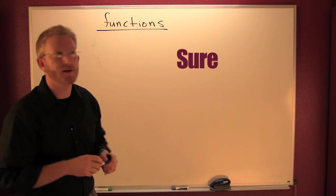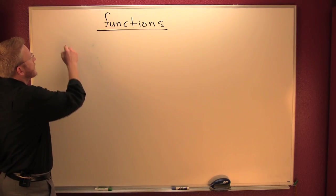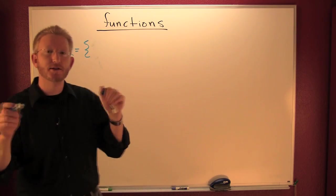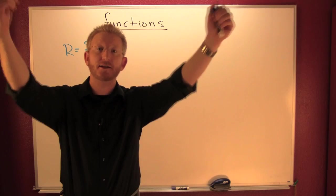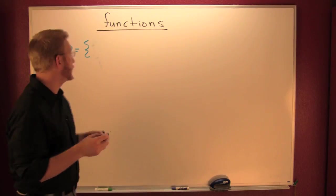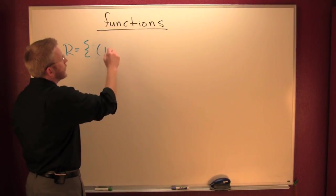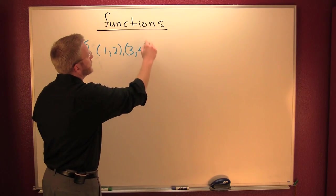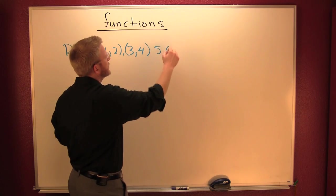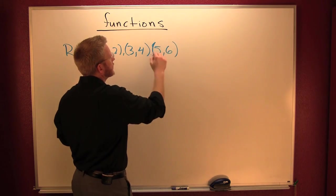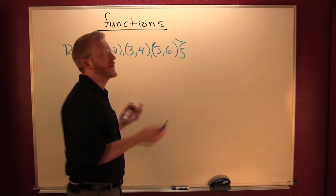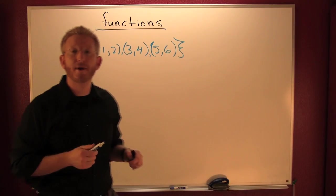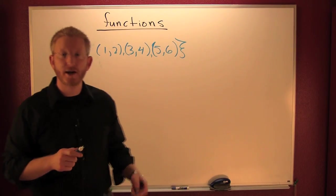Let's take a relation. We're relating the first component with the second component in these ordered pairs. That's one relation — just a set of ordered pairs — where our first element is our domain and our second element is our range.